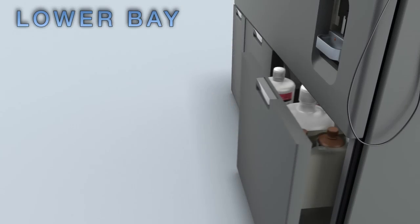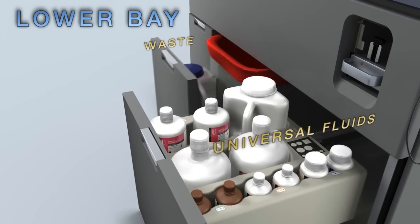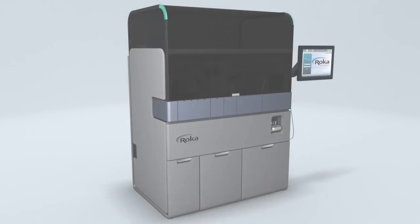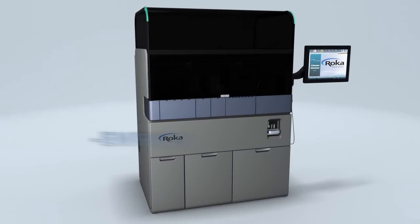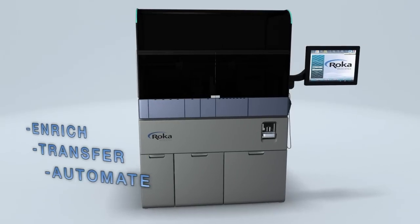The lower bay drawers house the universal fluids as well as the solid and liquid waste. The ROCA process requires three simple steps: enrich, transfer, and automate.